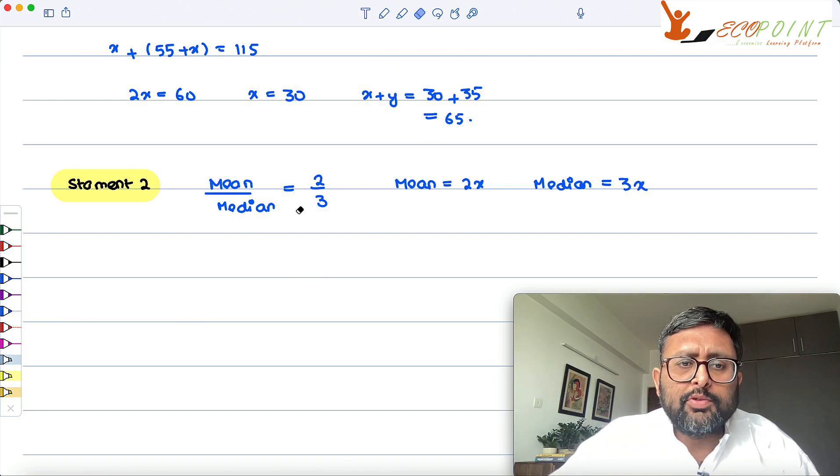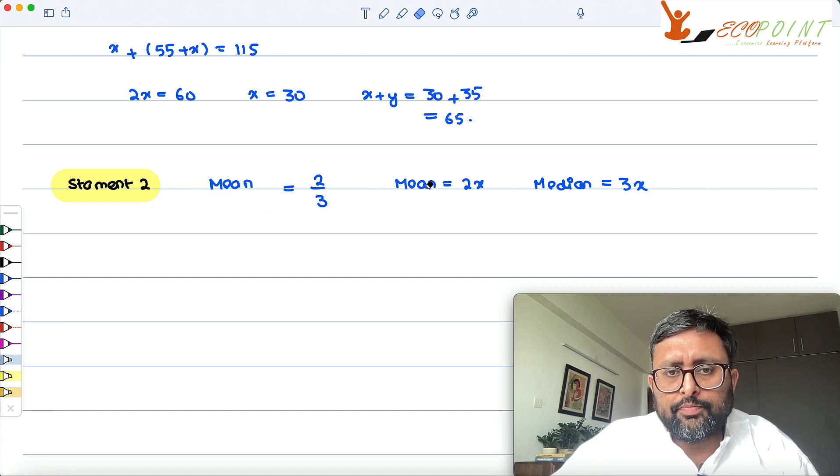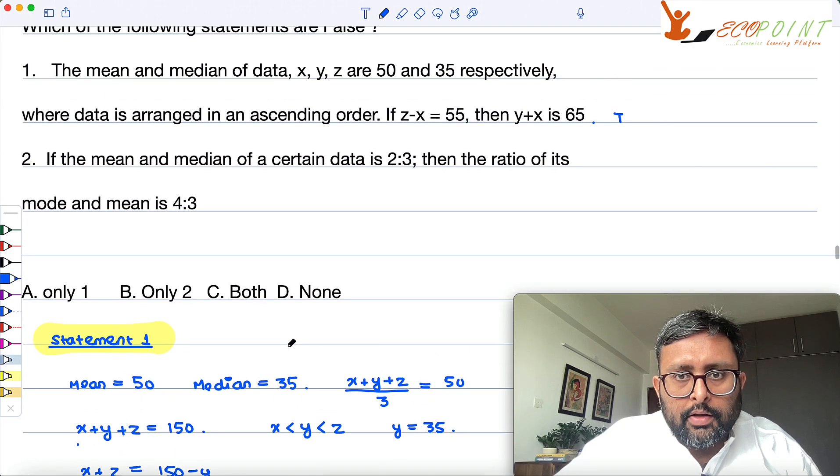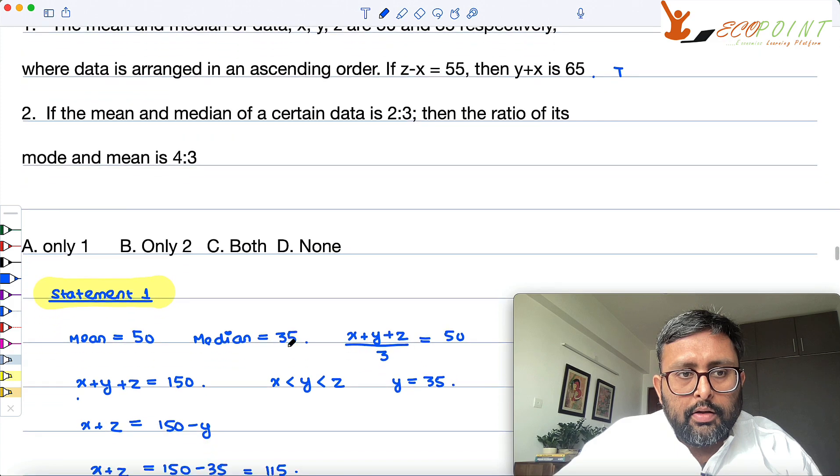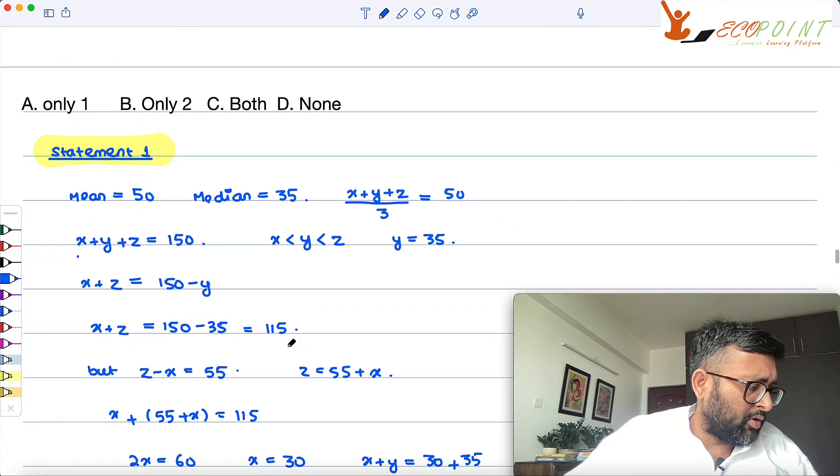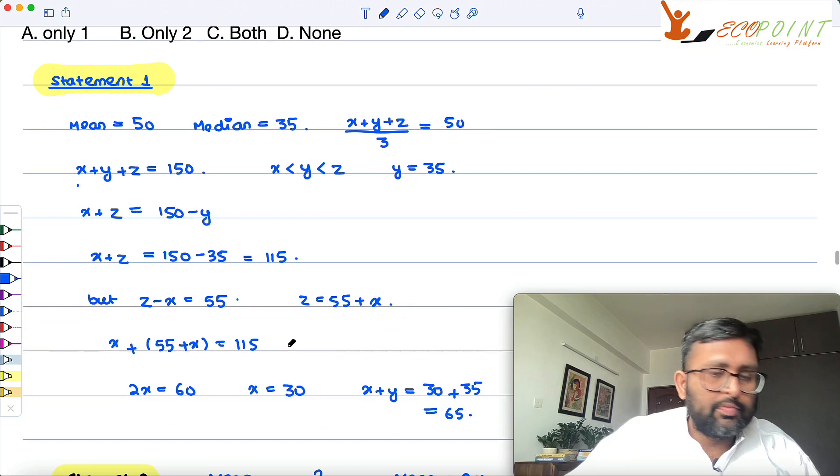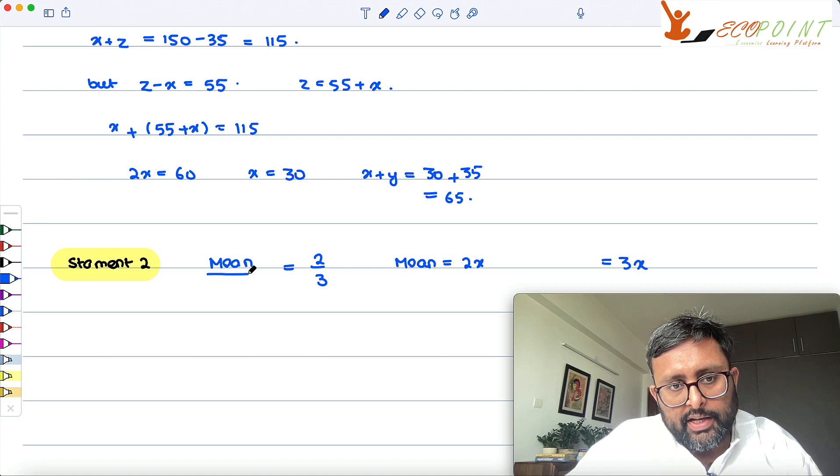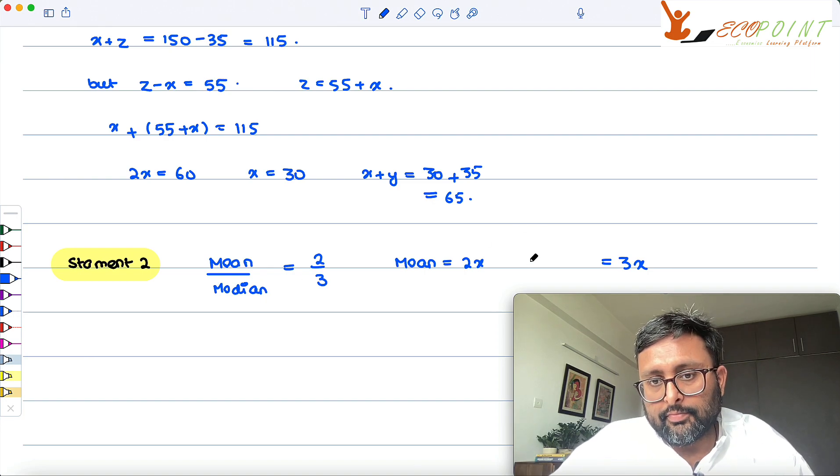Oh, mean upon mode. I'm so sorry. It should be mean upon mode. It should be mean upon median of a certain data. I have written it here wrong. My notes, I have written this wrong. Mean upon median here. I'm so sorry. I'm sorry.